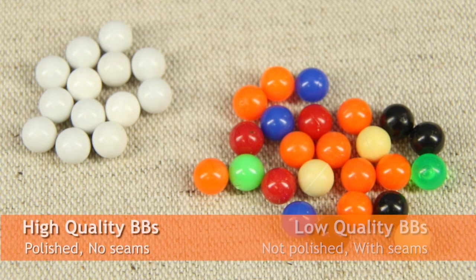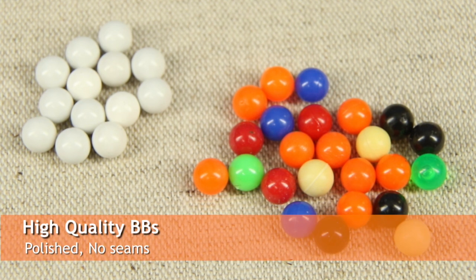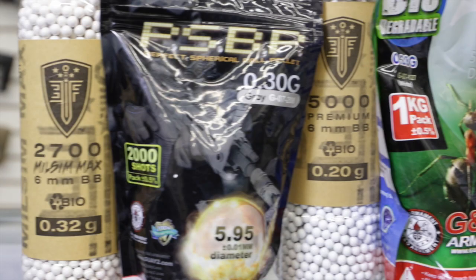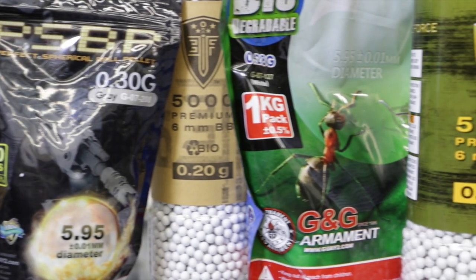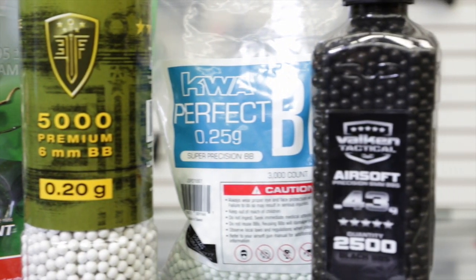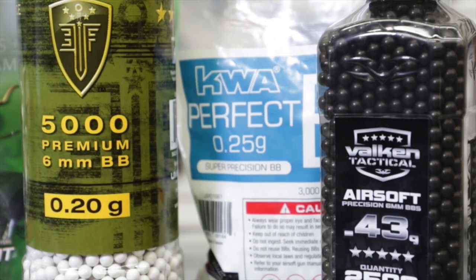Lastly is your BBs. Using good quality BBs will help a lot in your quest for tighter groupings. Good quality BBs are manufactured to a higher standard and come in different weights. If you're using a .2 BB now, try using some .25s or .28s instead. These are less likely to be affected by wind.